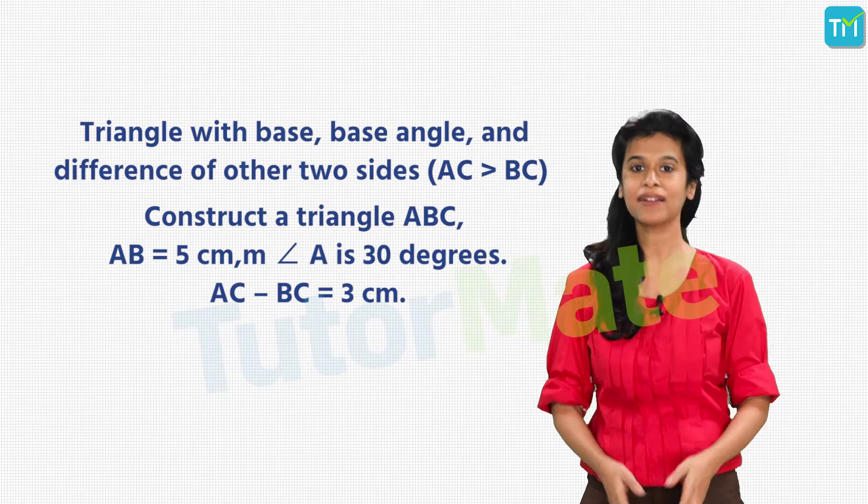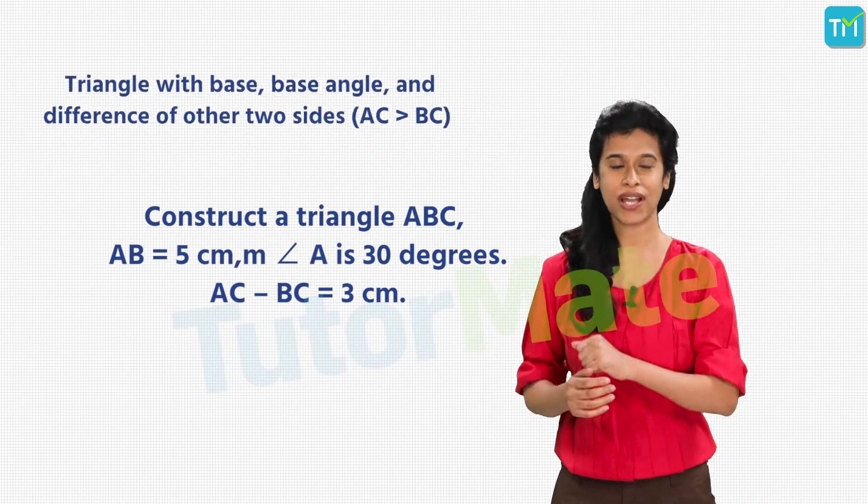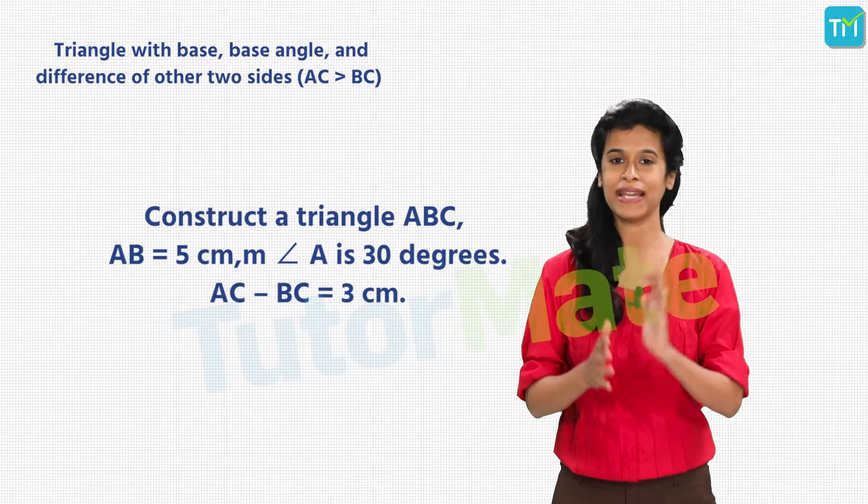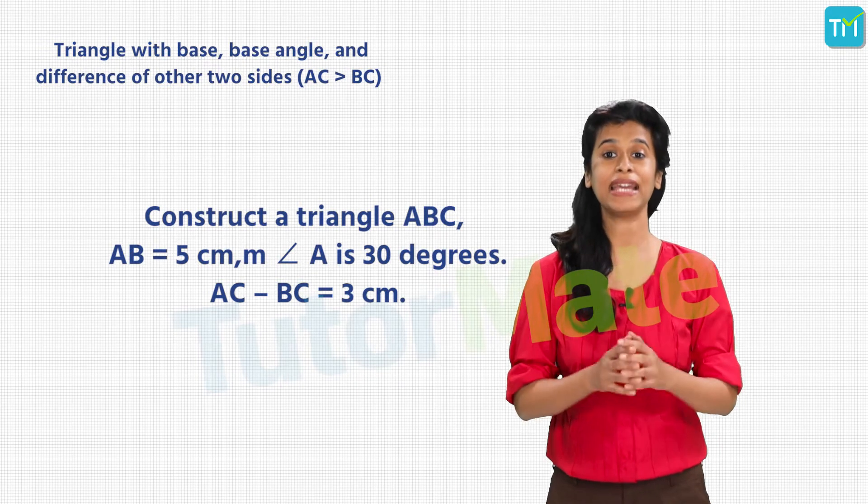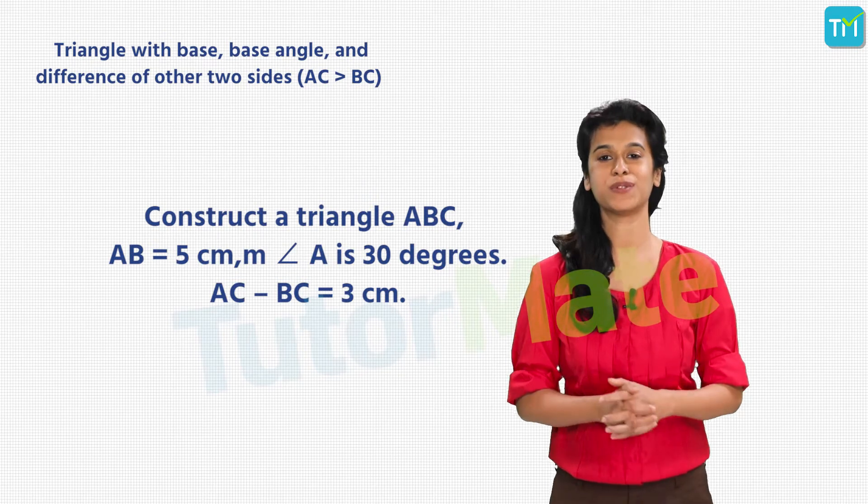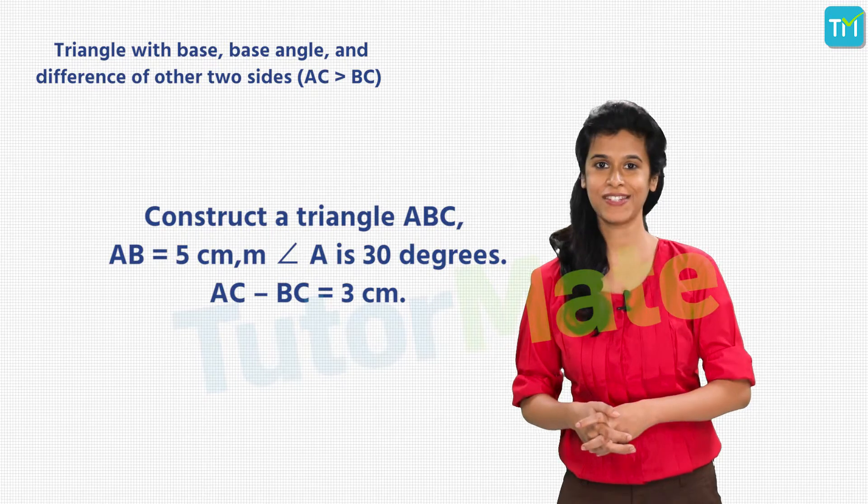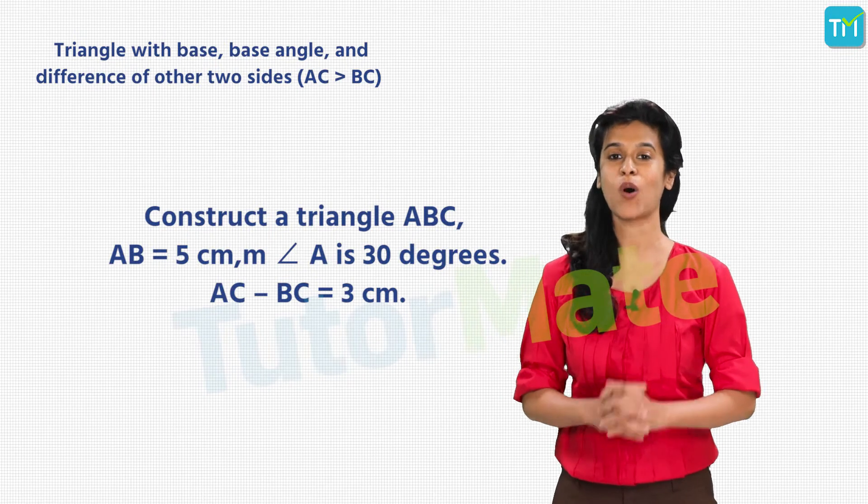Let us go one step further and construct a triangle where we are given its base, base angle and the difference of the other two sides. So, here is our challenge. Now, construct a triangle ABC where AB measures 5 centimeters and angle A is 30 degrees. AC minus BC is equal to 3 centimeters. Let us start. From the problem statement, we know that AC is longer than BC.